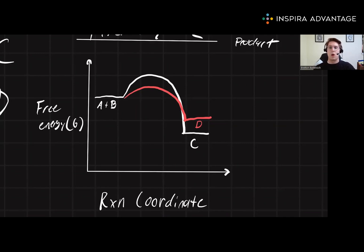In our diagram then, what type of product is C? Well, because C has the lowest free energy compared to D, this means it must be the thermodynamic product. Well, who's the kinetic product? Can C also be the kinetic product?